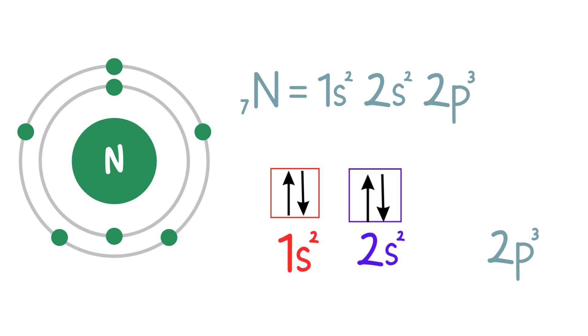The p-sub level has three orbitals and according to Hund's rule, the three electrons will fill the three orbitals singly with parallel spins like this. No pairing occurs yet because each orbital can hold one electron first.